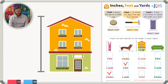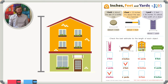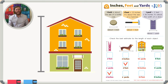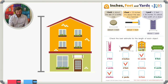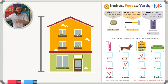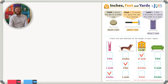Next we want to know the estimate for the height of a house. Ten inches would be like 10 bottle caps stacked on top of each other — no way, a house is much bigger than that. Ten feet — like 10 hammers stacked up — is getting closer, but probably not big enough for a whole house with two floors. The best estimate for the height of this house is 10 yards, which is really like 30 feet because there are three feet in one yard.